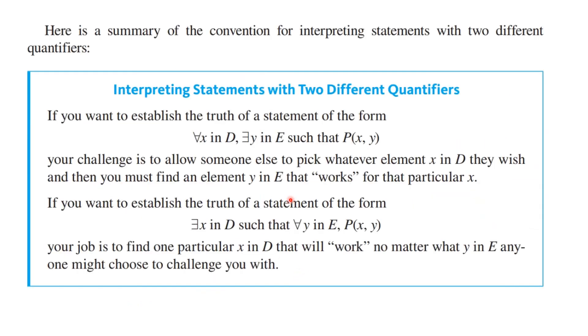So here's a summary of the conventions for interpreting statements with two different quantifiers. If you want to establish the truth of a statement of the form for every x in D, there exists a y in E such that P of xy, your challenge is to allow someone else to pick whatever x they wish, and then you find an element y in E that works for that particular x. If you want to establish the truth of the statement of the form, there exists an x in D such that for every y in E, P of xy, your job is to find one particular x in D that will work no matter what y in E anyone might choose to challenge you with.